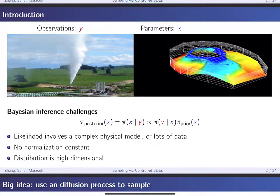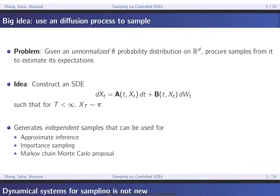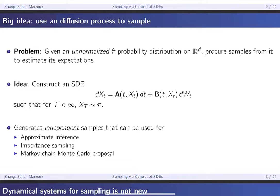Our idea is to consider how we can use a controlled diffusion process to sample distributions that are given to us. Here's the big idea of this talk: we want to figure out if there's a way to use a diffusion process to sample from a given unnormalized probability distribution. The problem is: given some unnormalized π̂, which is a probability distribution on ℝᵈ, you want to compute samples from its normalized version π, to compute expectations with respect to it.